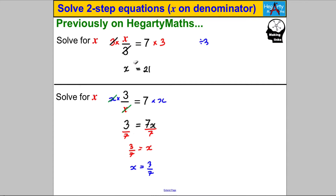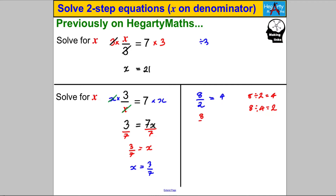I've got another way that's even easier. We know that 8 divided by 2 equals 4. A related division fact is that 8 divided by 4 equals 2 — the 2 and the 4 have just swapped places. If 8 divided by 2 is 4, then 8 divided by 4 is 2: we can swap the divisor and the result and the statement remains true.